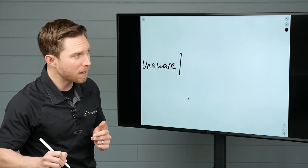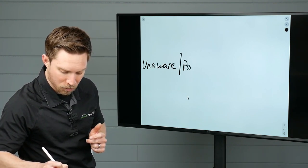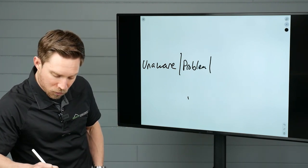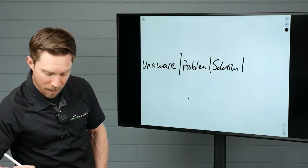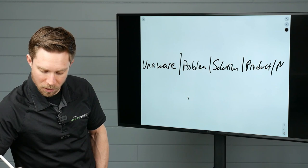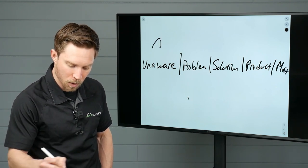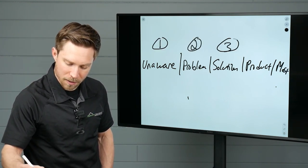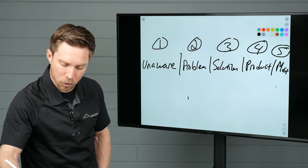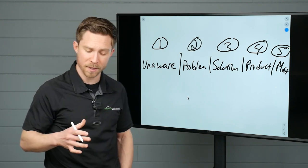We have unaware. Then next to it, we have problem. I'm going to shorthand this so I have room. That's problem aware. We have solution aware. And then we've got product aware. And then we have most aware. So this is one, two, three, four, and five. Now, I'm going to use blue for storm and red for retail.